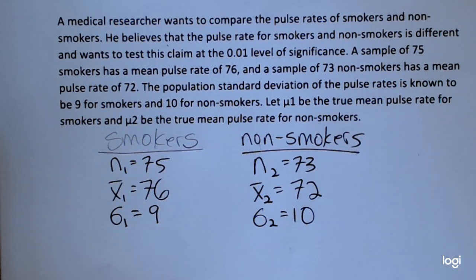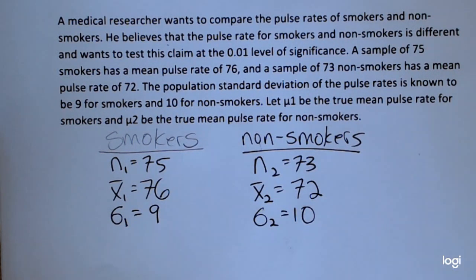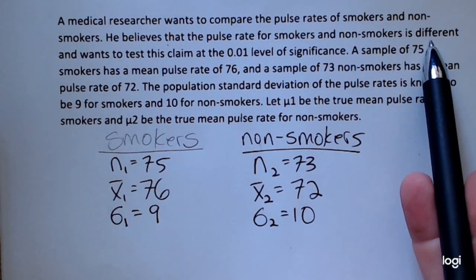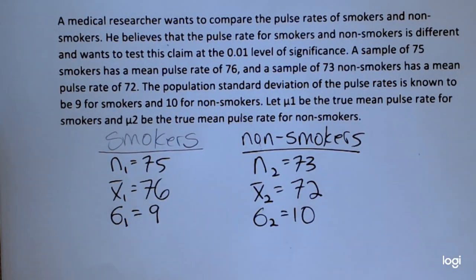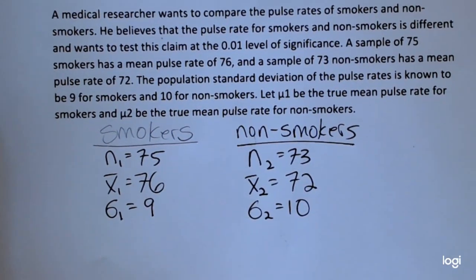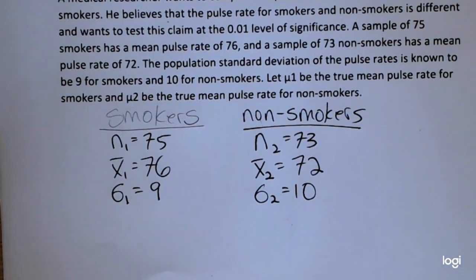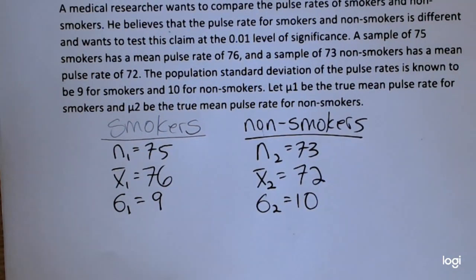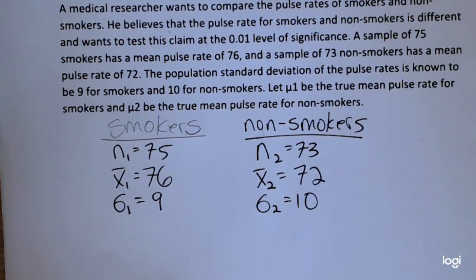We want to know whether or not the average pulse rate for smokers is different than for non-smokers. That gives us a clue as to how to set up the null and the alternative. The null and the alternative are going to be mathematical statements in terms of the two population parameters, mu sub 1 and mu sub 2, where both of those means represent the true population pulse rates for smokers and non-smokers, respectively.